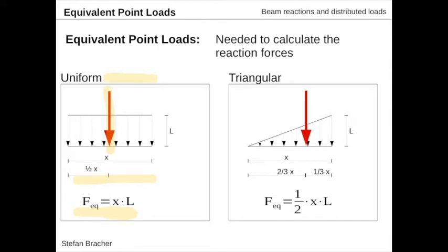In the triangular case, it's a bit more complicated. The equivalent load will be one-half the surface times the maximum load on the right side—basically the surface area of the triangle. The central point where this equivalent load is acting is one-third from the bigger side of the triangle and two-thirds along the way from the smaller side of the triangle.